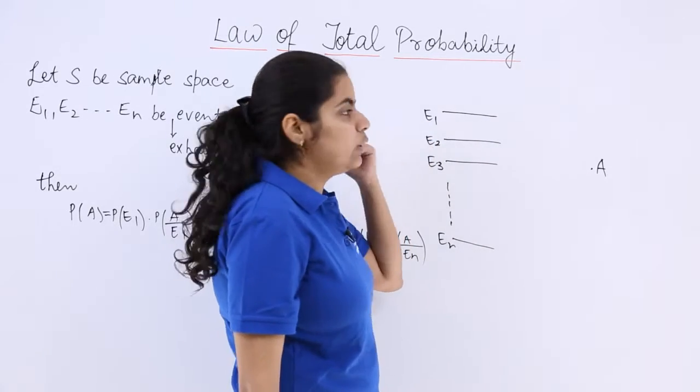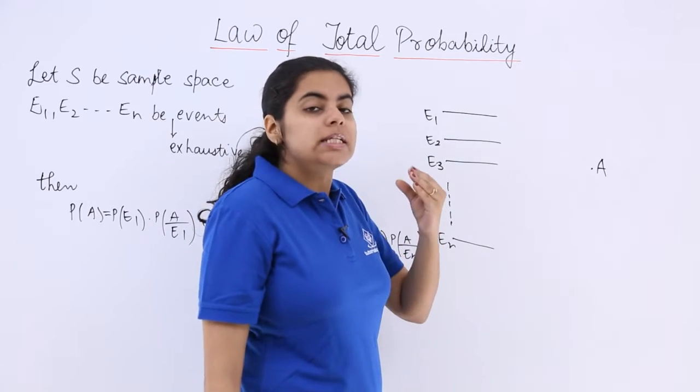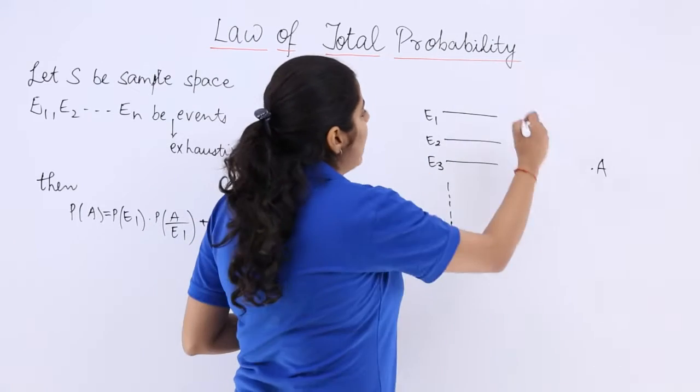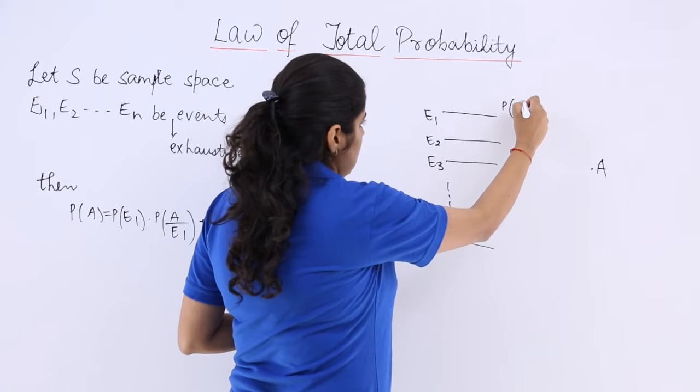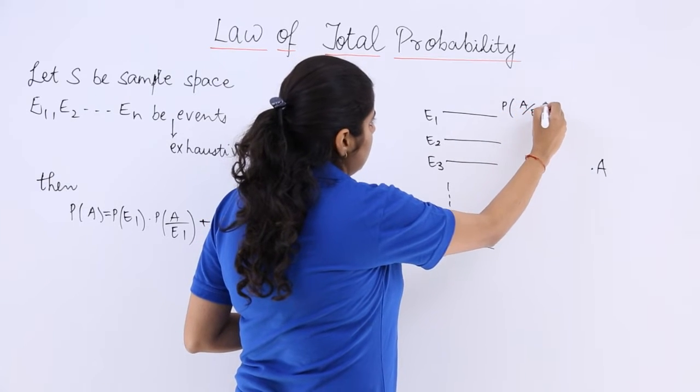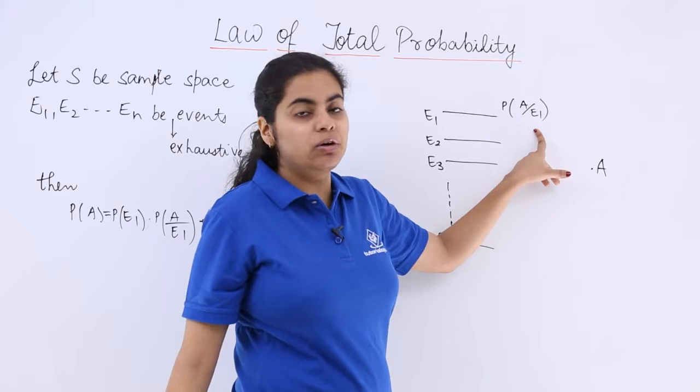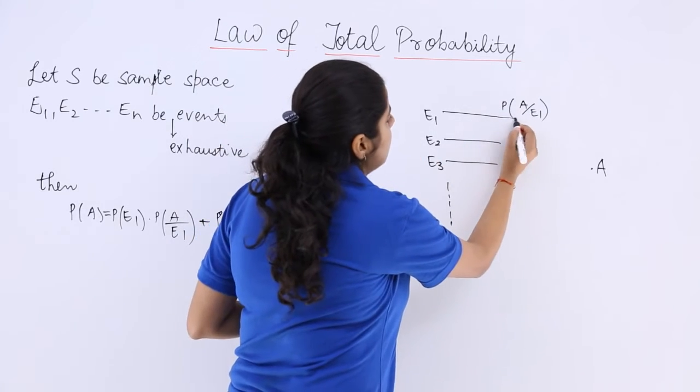First E1, then it is followed by probability of A over E1. We are going to compute the probability of A when E1 has occurred.